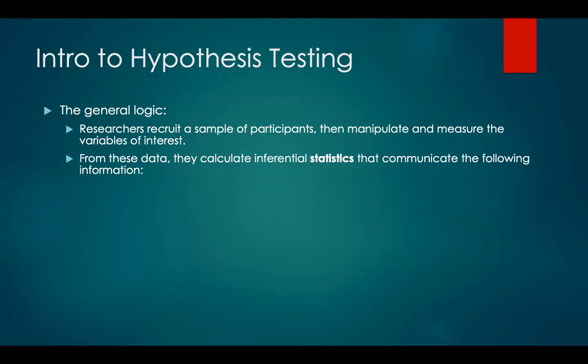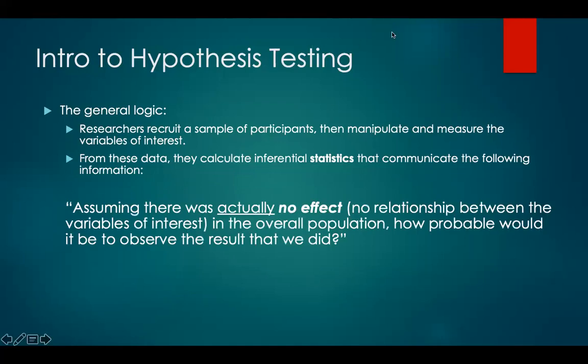When testing a hypothesis, researchers recruit a sample of participants, then they manipulate and or measure the variables of interest. From the data they collect, they calculate inferential statistics that communicate the following information: assuming there is actually no effect — no relationship between the variables of interest in the overall population — how probable would it be to observe the result that we did, or the data that we collected?